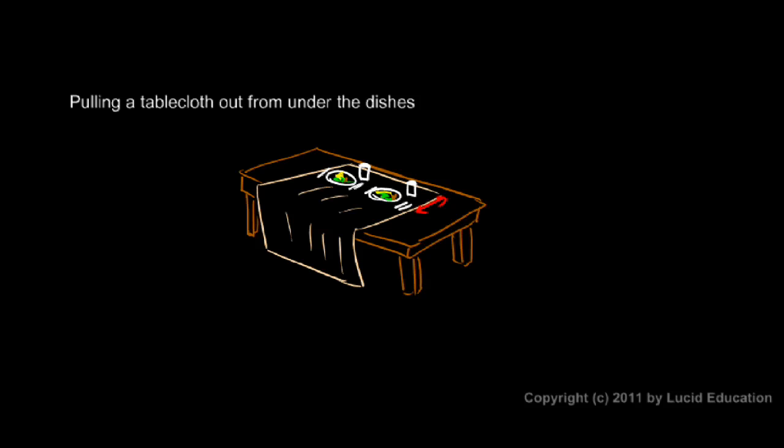The tablecloth then isn't in contact with the dishes for all that long. You can imagine that if you came around to this side and grabbed the tablecloth right here and pulled this way, you would have to pull all of this length of tablecloth out from under the dishes, and that would be very hard to do. So your first tip is to set it up so that the amount of cloth you have to drag under the dishes is relatively small - in this case, just about this much cloth is going to get pulled out from under the dishes, not the entire cloth.